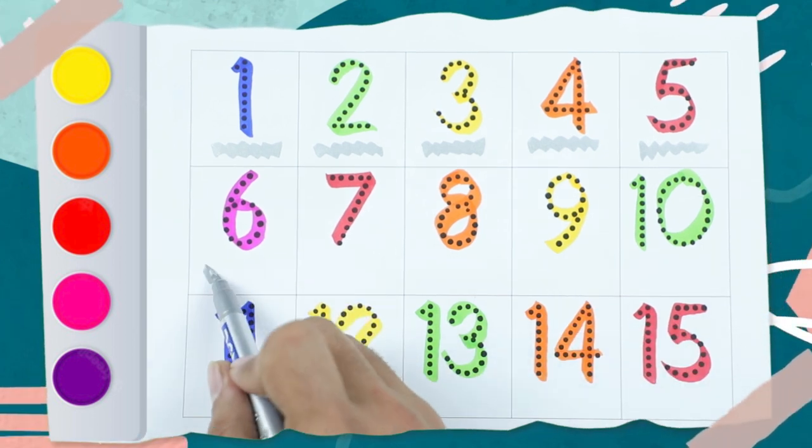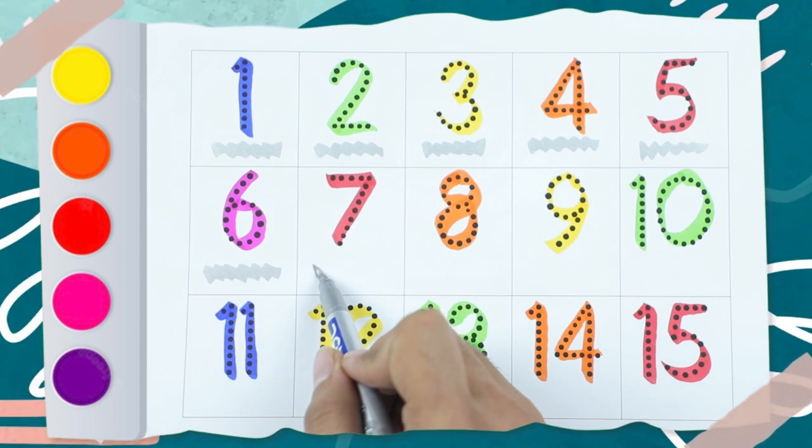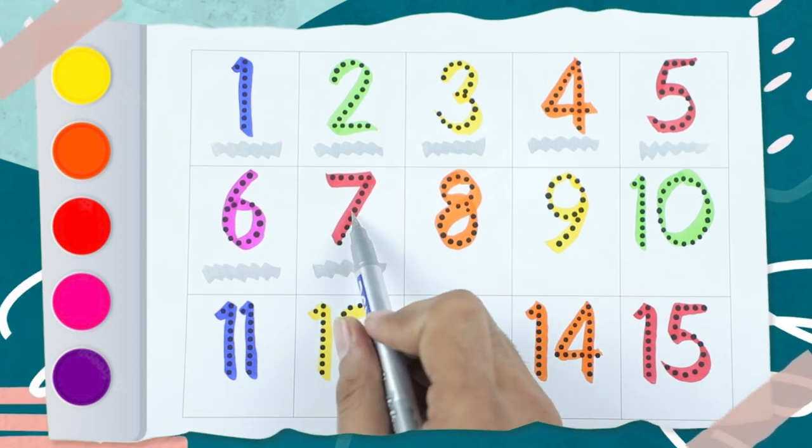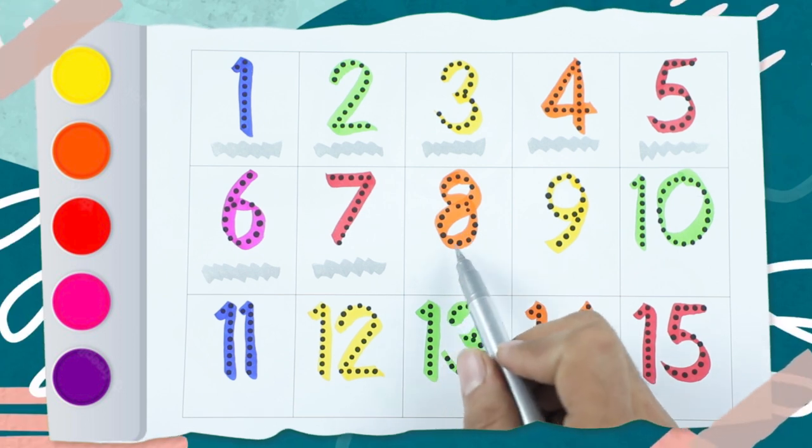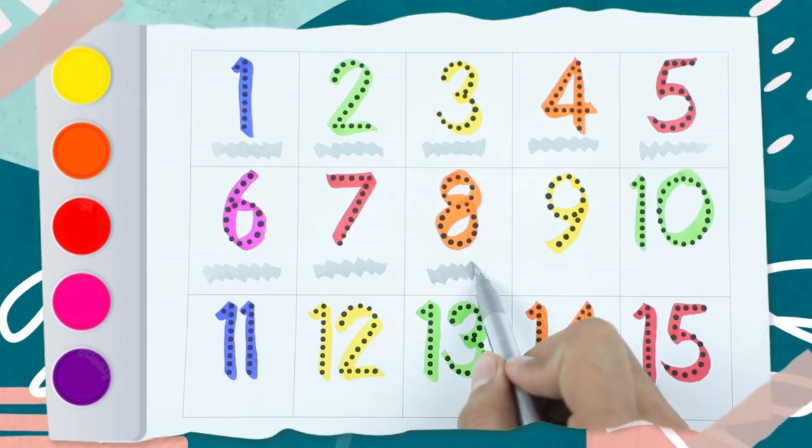Pink is 6 number. 7 number is red color. Which number? 8. And which color? Orange color, 8.